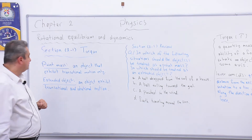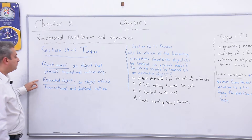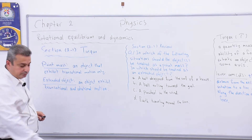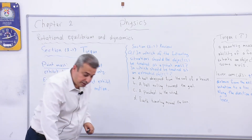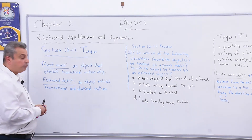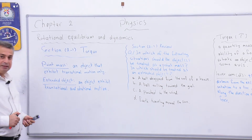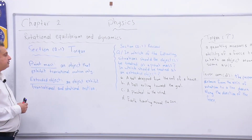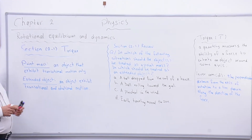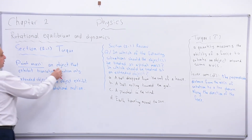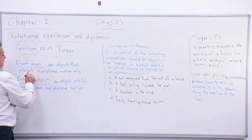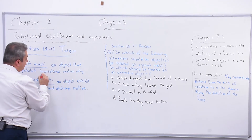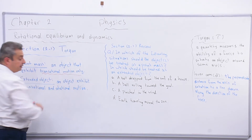We have objects called point mass and the other one extended object. To distinguish between them, that depends on the way the object is moving. For a point mass, the key is that it is an object that exhibits translational motion only.